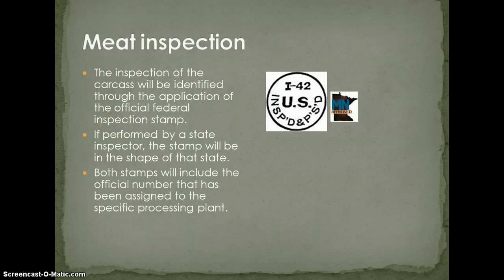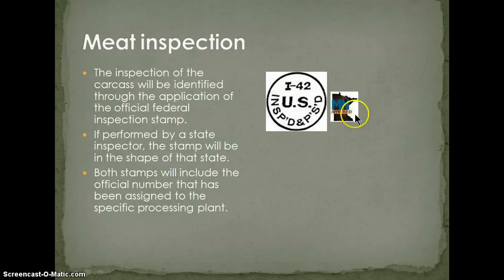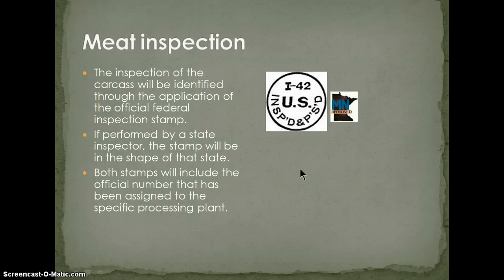The inspection of a carcass is identified through the application of the official federal inspection stamp. Stamps are issued like a police badge — each inspector has a specific number, and each plant also has a number. State inspection is different from federal: a state inspection stamp means the state had to exceed federal guidelines to maintain that status, generally doing things better than federal inspection, and states are mandated to have more inspectors in the facility.